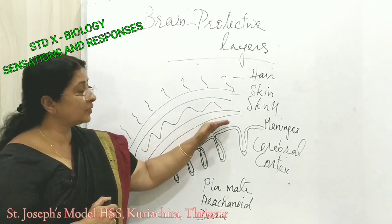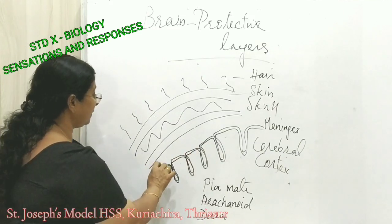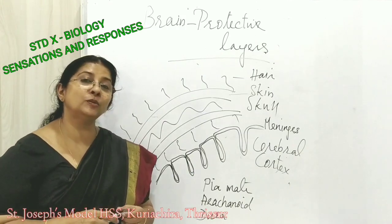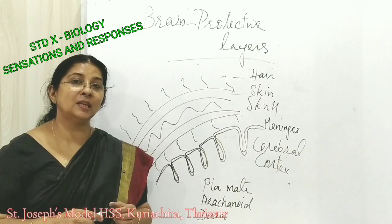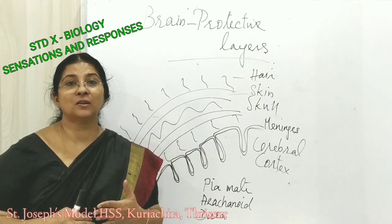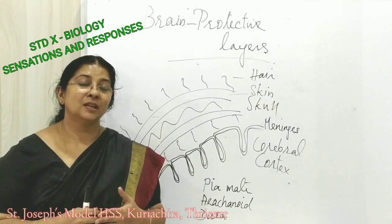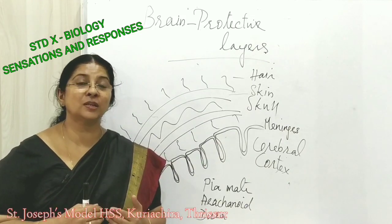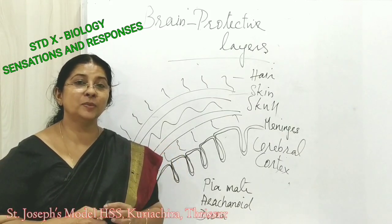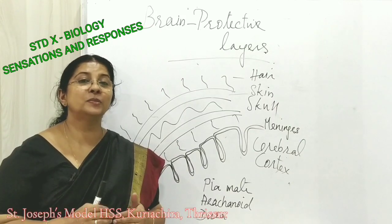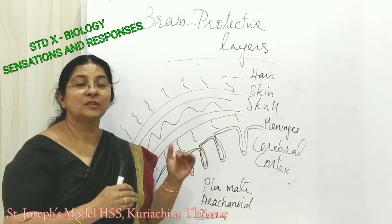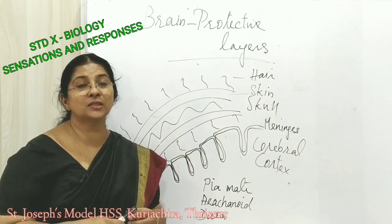In between the layers of the meninges, especially in the middle layer, a fluid is present. This fluid is called cerebrospinal fluid, or CSF. It covers the whole cerebrum as well as the spinal cord — that is why it is called cerebrospinal fluid. A fluid always acts as a shock absorber, and the CSF gives a cushioning effect to the brain. It extends from the cerebrum to the spinal cord.